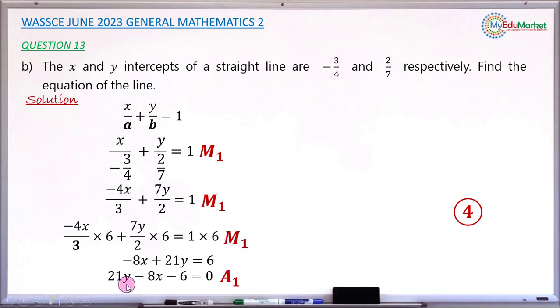And when you now have the final equation as 21y minus 8x minus 6 exactly equals 0, you have this accuracy 1 mark. So in total, this question has 4 good marks. Thank you.